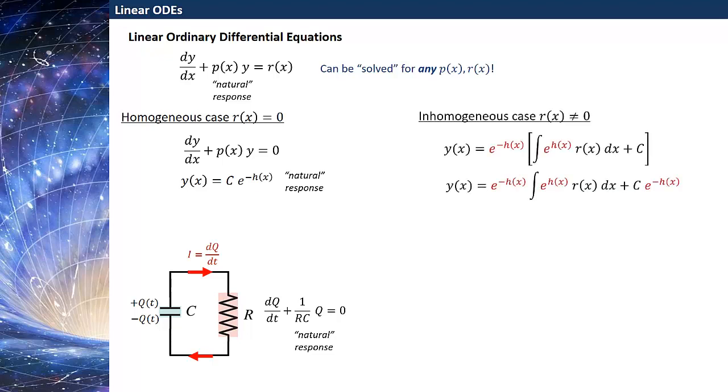How about the inhomogeneous case? In the inhomogeneous case we had this more complicated expression for y(x). Let me multiply the e to the minus h through so I get e to the minus h times the integral plus the constant times e to the minus h.